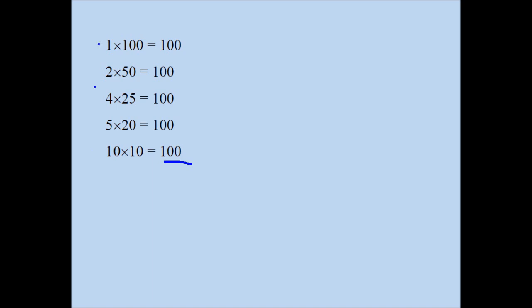1 divides 100, 1 times 100 is 100. 2 divides 100, 2 times 50 is 100. 4 divides 100, 4 times 25 is 100. 3 doesn't, by the way. 5 does, 5 times 20 is 100. 6 doesn't, 7 doesn't, 8 doesn't, 9 doesn't, 10 does.